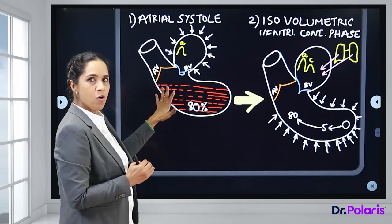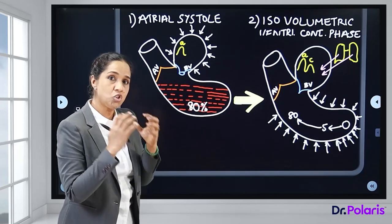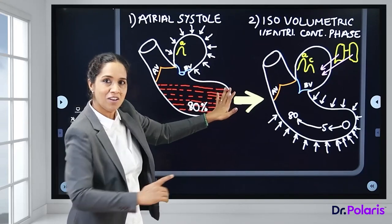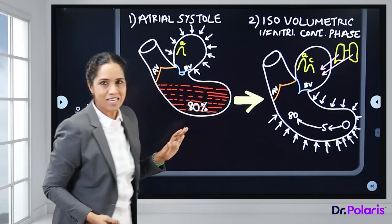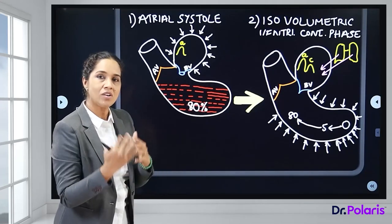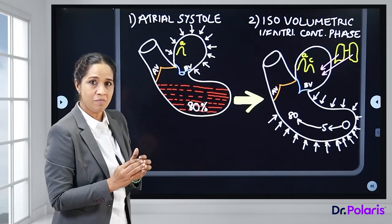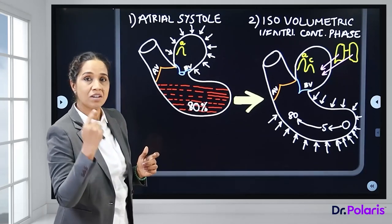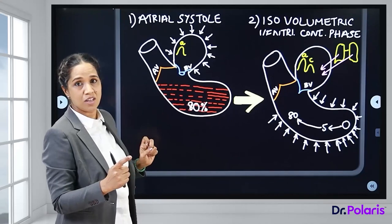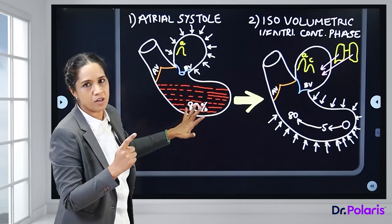As the atria contracts, pressure in the atria increases, producing the first positive wave (A wave) in the jugular venous pulse. The blood in the atria is then emptied into the ventricle through the open atrioventricular valve, completing ventricular filling before the next phase begins.